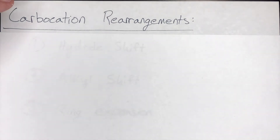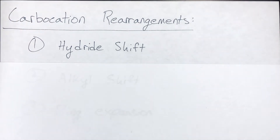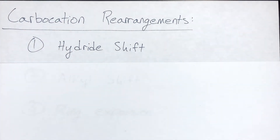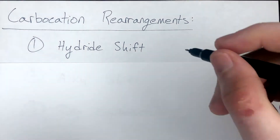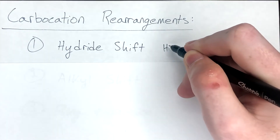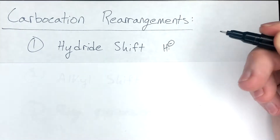There are three main categories I'll cover. The first main category is a hydride shift. It's important to know what a hydride is — a hydride is H⁻, a hydrogen atom with a lone pair.